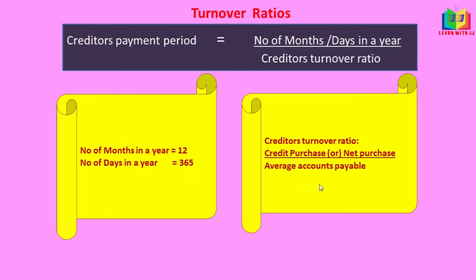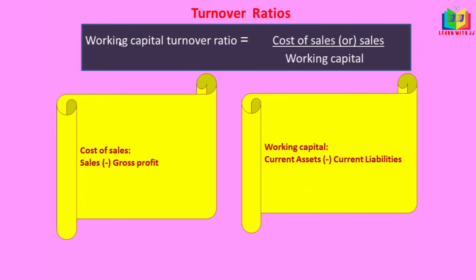Next is working capital turnover ratio. The formula is cost of sales or sales divided by working capital. In the absence of cost of sales we can use sales. Cost of sales is sales minus gross profit, and working capital is current assets minus current liabilities — as we already covered in liquidity ratios.